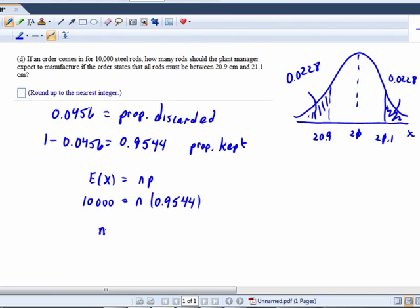So to get n, I just compute 10,000 divided by 0.9544, and that gives me - say that again - 10,478. 10,478 on the nose, rounded, which, okay, round up.